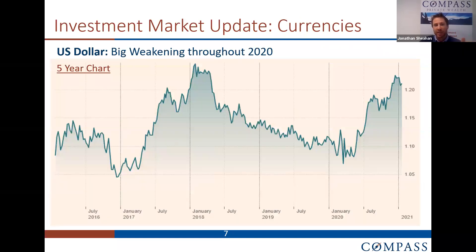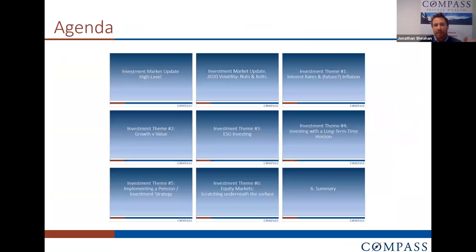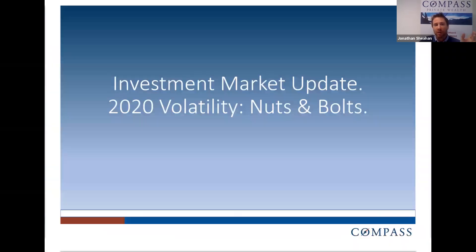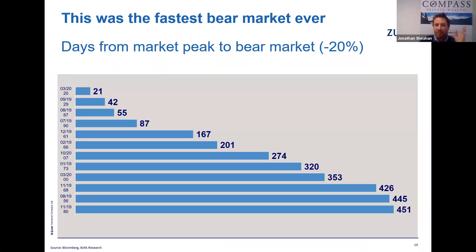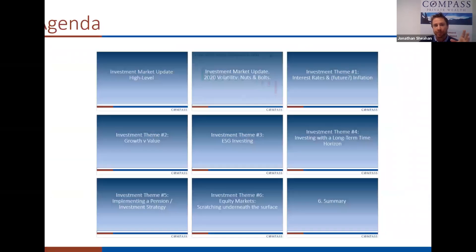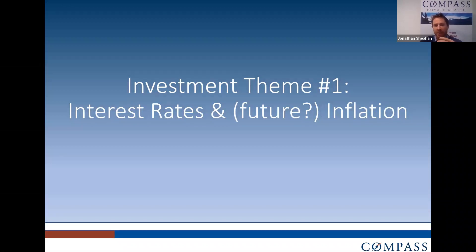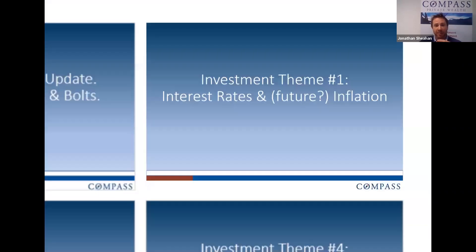I then discussed the weakening of the US dollar this year, and we looked at sterling since the Brexit referendum in 2016. Ian then spoke about investment markets in terms of the level of the bear market we experienced in 2020, and he also discussed the sector divergence we had in 2020. I then outlined interest rates and how we're in a very low interest rate environment, and that all the quantitative easing from central banks is bound to create inflation at some stage.